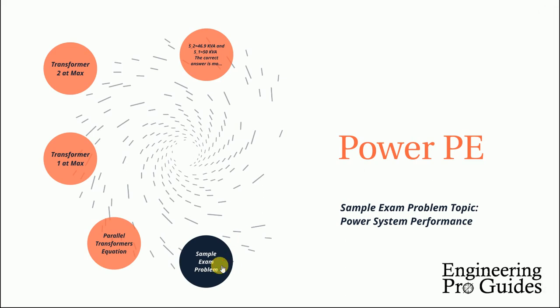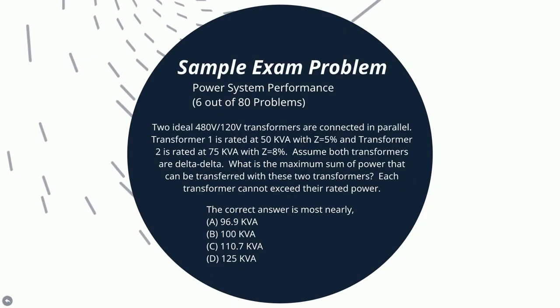The question reads: two ideal 480 volt, 120 volt transformers are connected in parallel. Transformer 1 is rated at 50 kVA with an impedance of Z equal to 5%, and Transformer 2 is rated at 75 kVA with Z equal to 8%. Assume both transformers are delta-delta. What is the maximum sum of power that can be transferred with these two transformers? Each transformer cannot exceed their rated power.